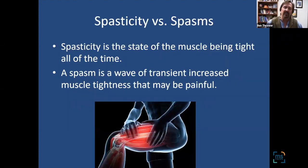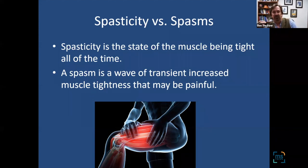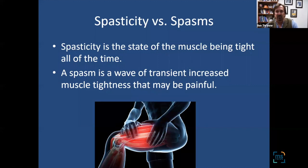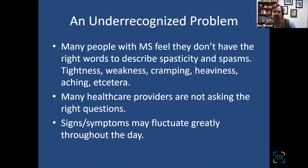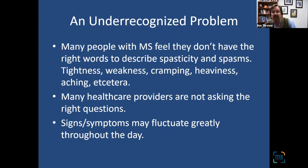There is spasticity and there are spasms. Spasticity is the chronic state of the muscle being too tight — it's almost a 24/7 sort of symptom. A spasm is more like a cramp; it's a wave of increased tightness in a muscle that has a beginning and an end, and it can be quite painful or uncomfortable. People use different terms to describe what they're experiencing: tightness, heaviness, weakness, cramping, or aching.